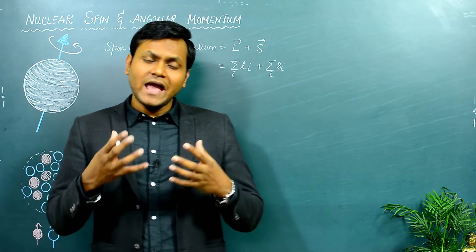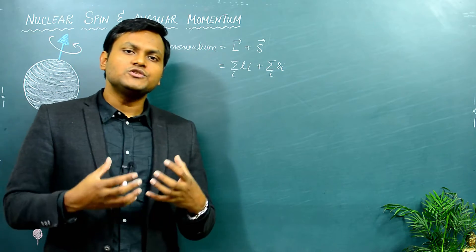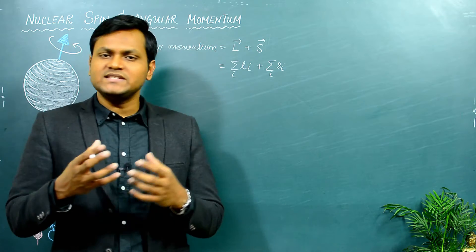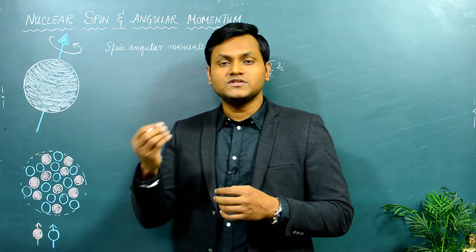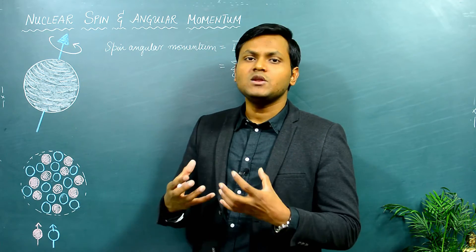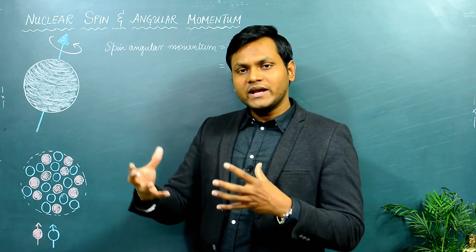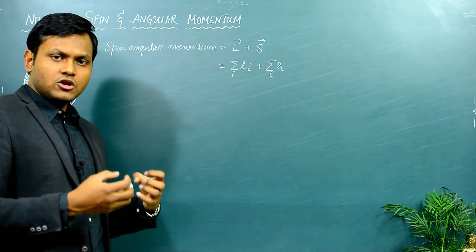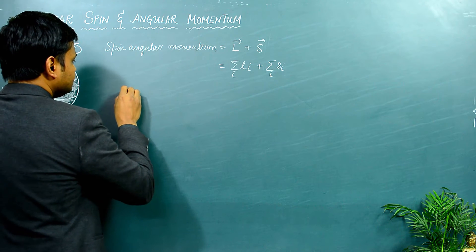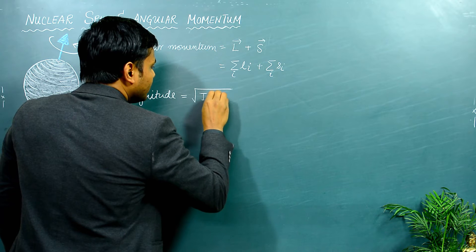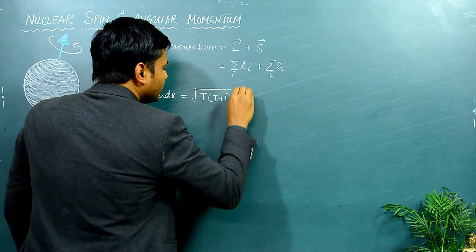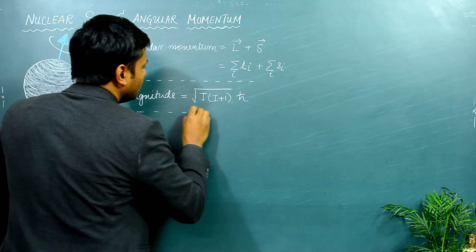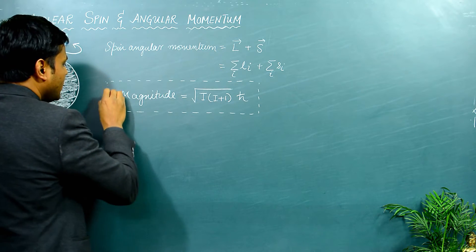The total angular momentum of a nucleus also shows quantization, not only in its magnitude but also in its direction. So the nucleus basically behaves as a singular particle, just like neutrons, protons, or electrons, whose total angular momentum shows quantization in both magnitude and direction. The magnitude quantization of any given nucleus is given as √(I(I+1)) ℏ, where this expression gives the magnitude of the total spin angular momentum of any given nucleus.